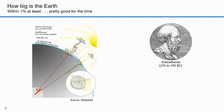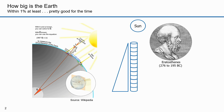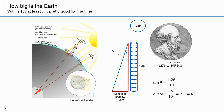Eratosthenes had somebody measure the length of the shadow in Alexandria. If the pillar was 10 meters high, he would have measured a shadow of 1.26 meters. Let's call this angle theta. The tangent of theta is the ratio of the length of the opposite side over the adjacent side — that's 1.26 over 10. If we know the lengths and want to find the angle, we use the inverse of the tangent function, which is the arc tangent. The arc tangent of 1.26 over 10 is 7.2 degrees.